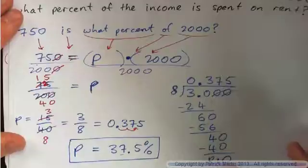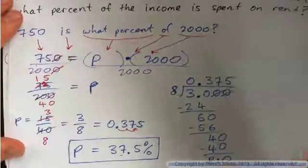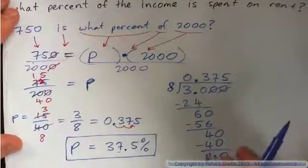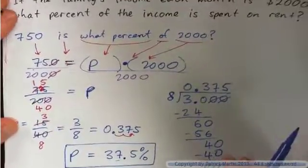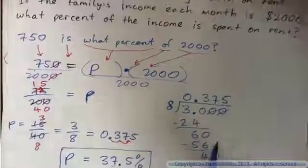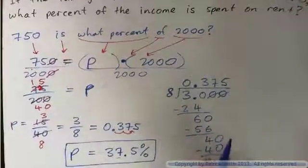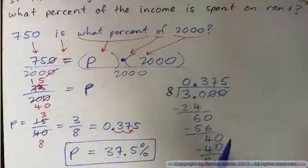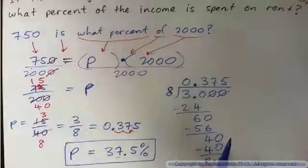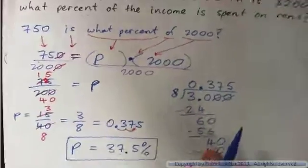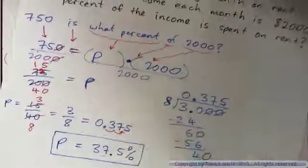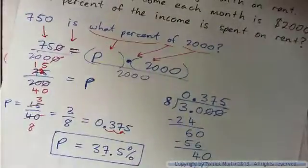They usually advise that your rent be no more than 25% of your income. Anything more than that is a bad idea — so you'd need a smaller house or a bigger income there.